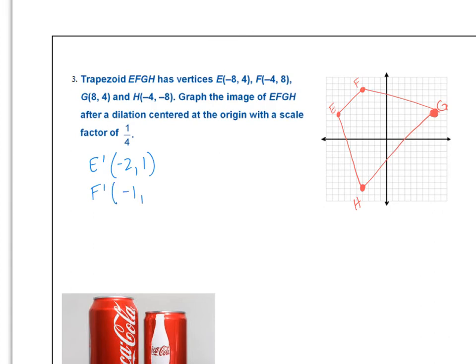F prime, I have (-1,2). G prime (2,1). H prime (-1,-2). And then I graph my new points. So (-2,1). Here's E prime. (-1,2). Here's F prime. (2,1). Here's G prime.